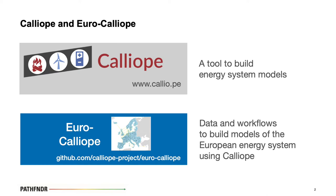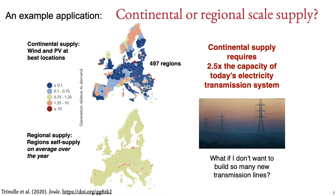I want to jump right in with an example application to illustrate what kind of things we can do with these two tools. This is from a study from last year, also coming from the PhD thesis of Tim Tröndle. Here we first run an electricity system model to design a continent-scale renewable electricity system for Europe. This is a cost-minimizing model, so it uses the best possible locations for wind and PV.